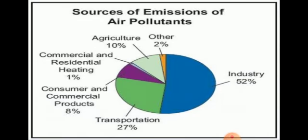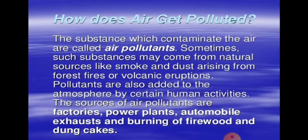The sources of emissions of air pollutants are: industries 52%, transportation 27%, consumer and commercial products 8%, commercial and residential heating 1%, agriculture 10%, and other sources 2%. These are the different sources from where the emission of air pollutants takes place.